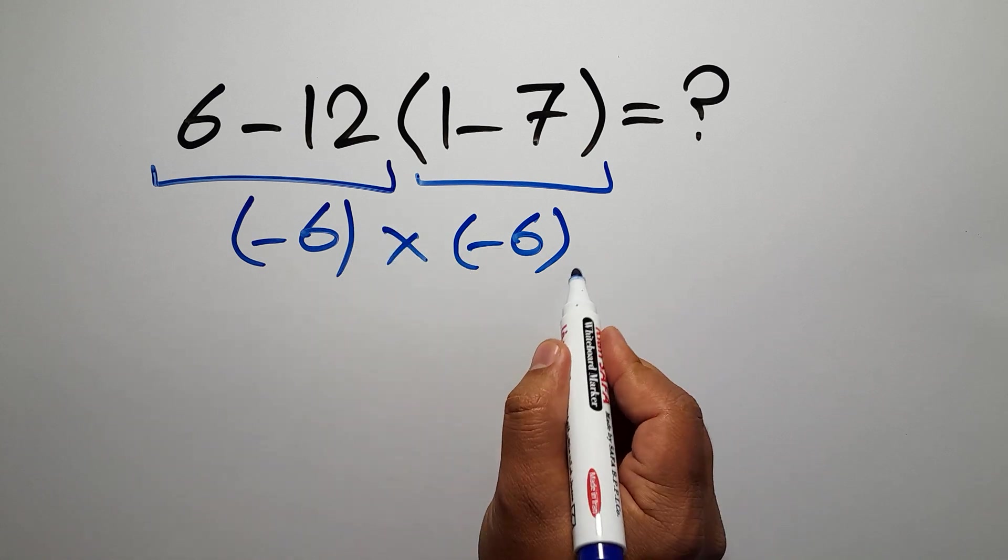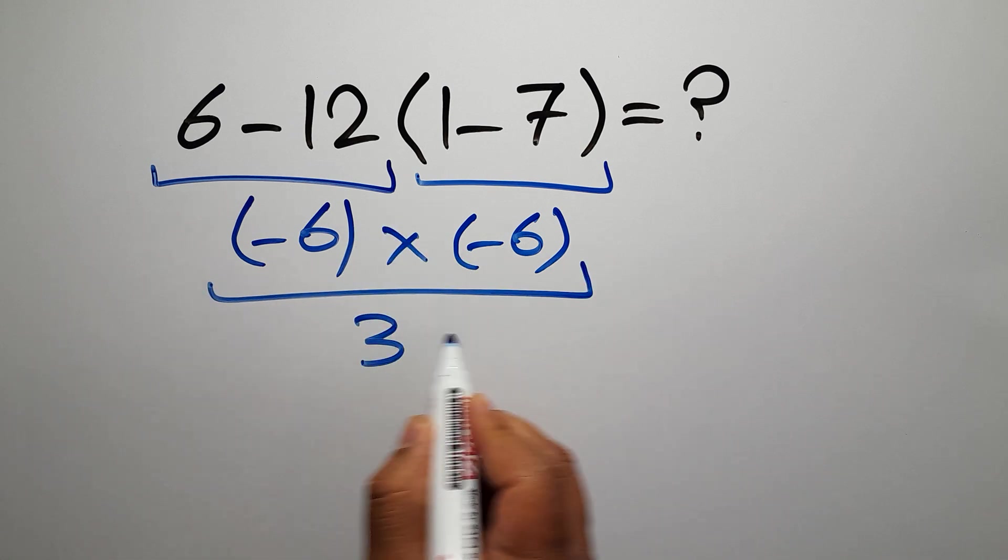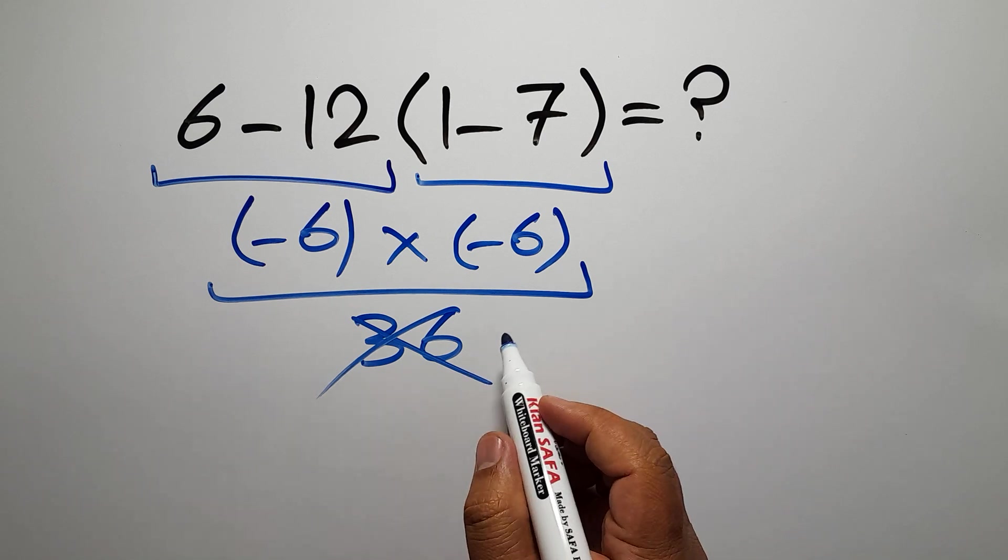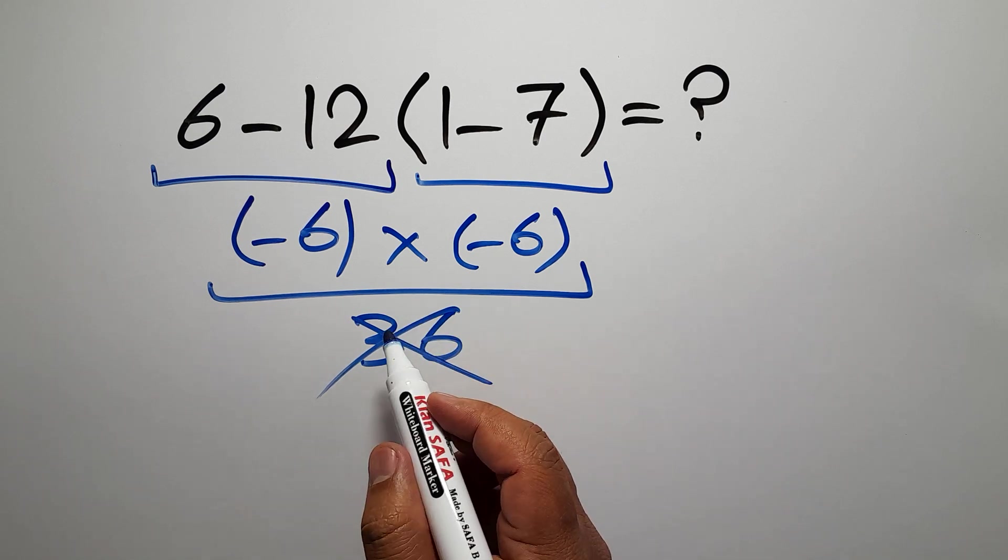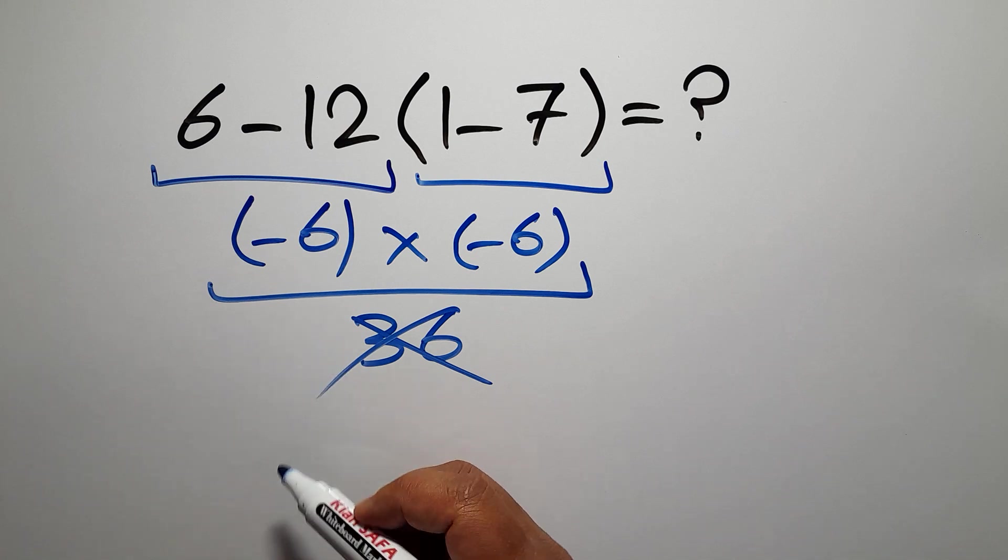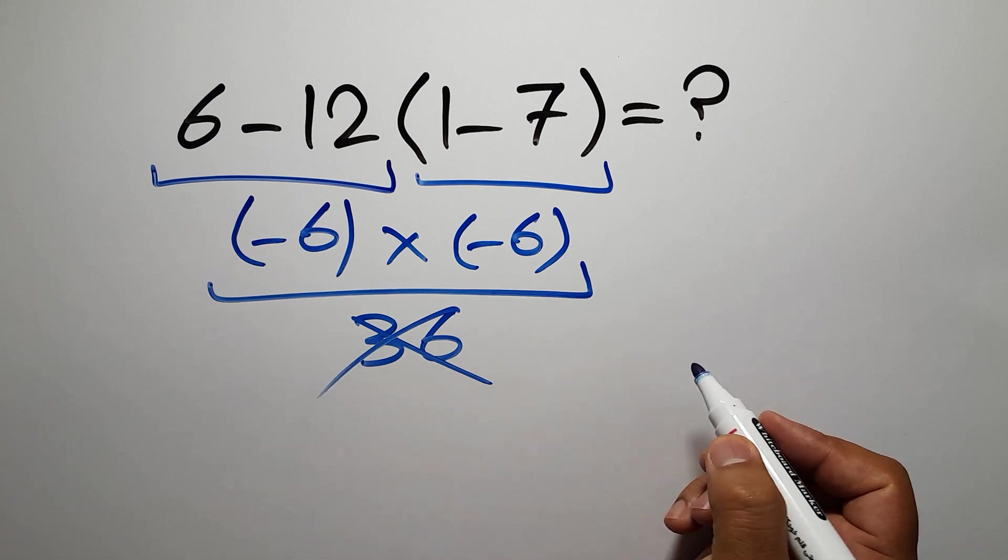This equals 36. But this answer is not correct because in mathematics we can't just go left to right or prioritize operations however we like. We need to follow the order of operations.